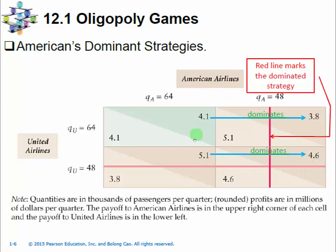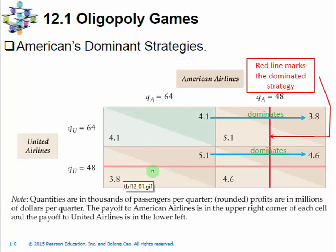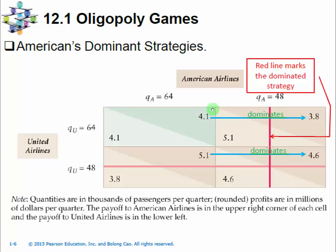So American Airlines will play the high output level again. Whichever strategy United picks, American Airlines is always better off playing the high output strategy. We have a terminology for this kind of strategy: if a player has a strategy that is the best thing to do no matter which strategy its opponent takes, it is called a dominant strategy. This strategy dominates all other strategies for this player. If a strategy is not a dominant strategy, then it becomes a dominated strategy. Here the low output strategy is the better choice in either situation, so the low output will be the dominated strategy for American Airlines.